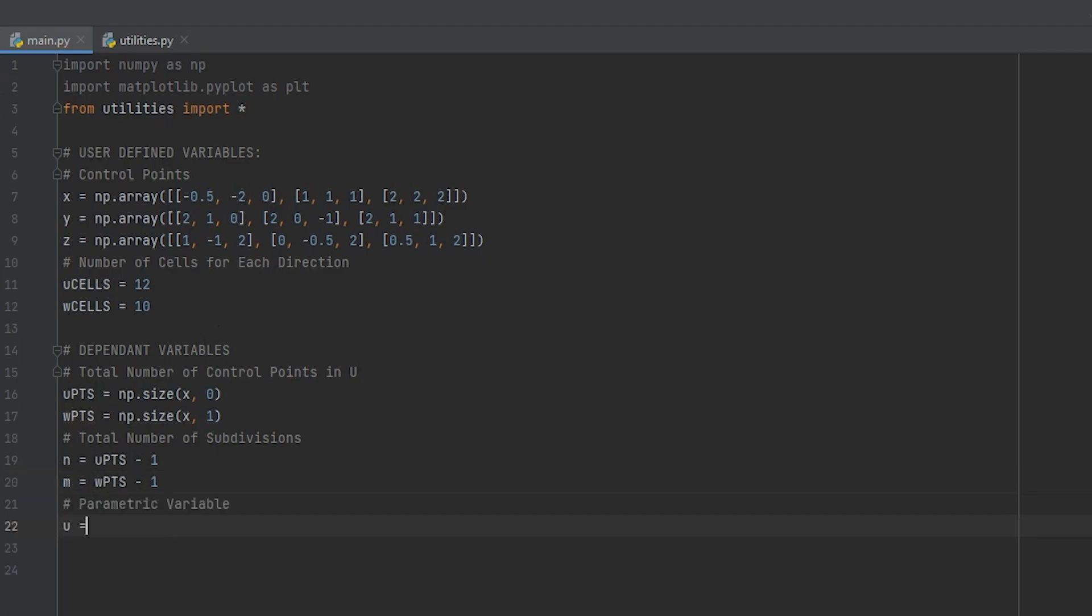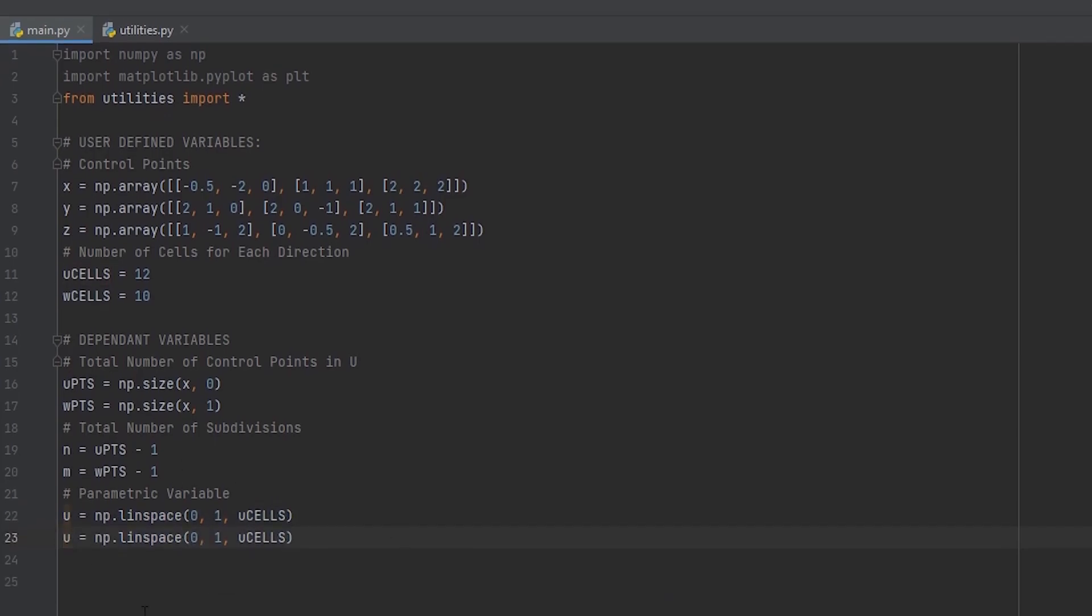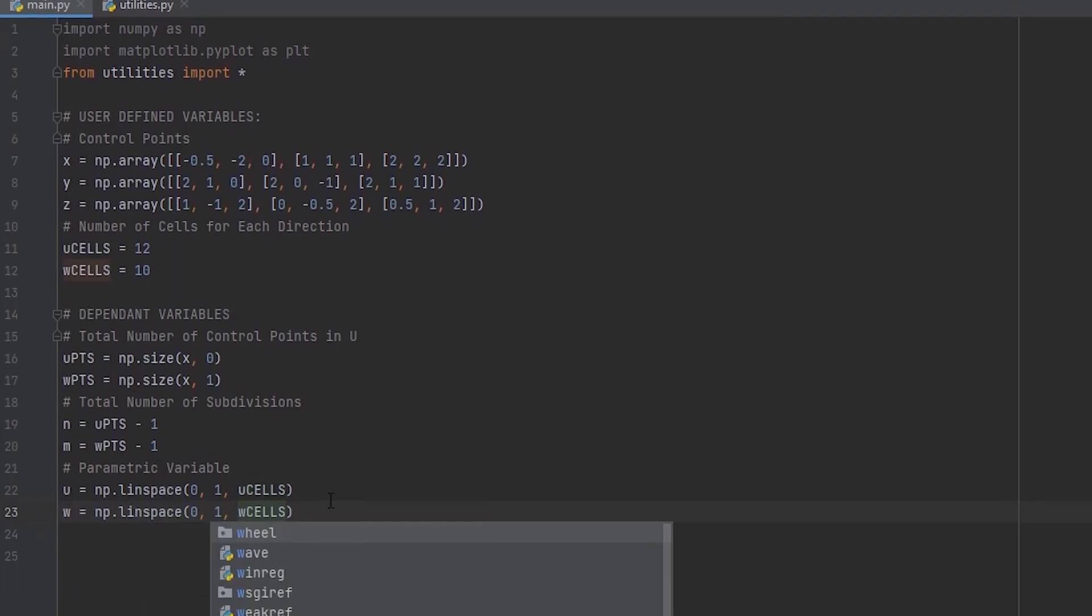The parametric variables U and W will just be uniformly spaced vectors that go from zero to one. We can use the function linspace for that and the number of partitions will depend on the number of cells we specified for each direction.